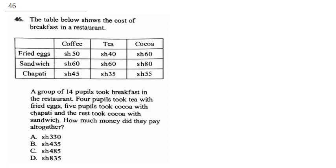A group of 14 pupils took breakfast in the restaurant. Four pupils took tea with fried eggs, five pupils took cocoa with chapati, and the rest took cocoa with sandwich. How much money did they pay all together?